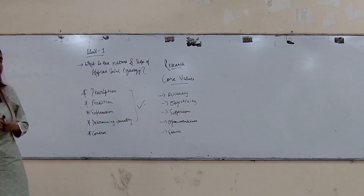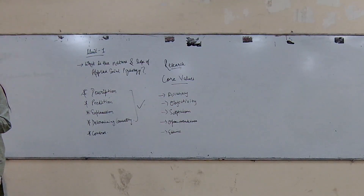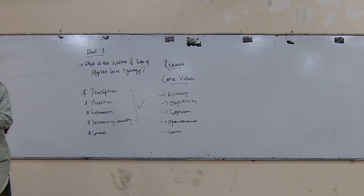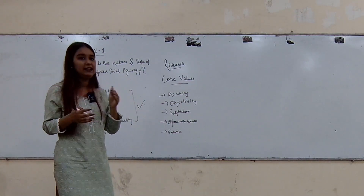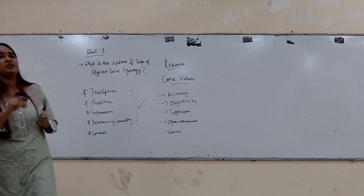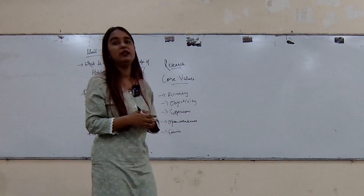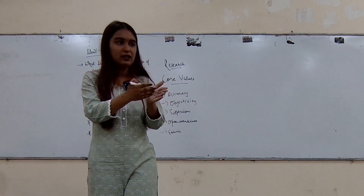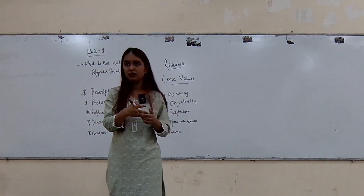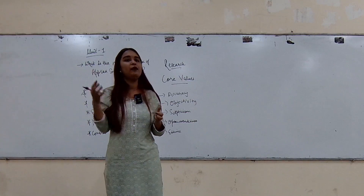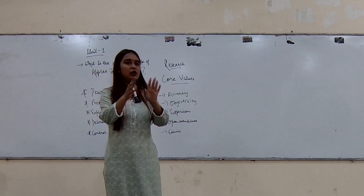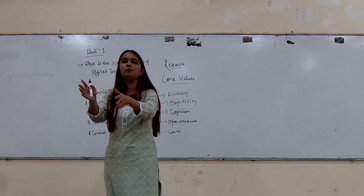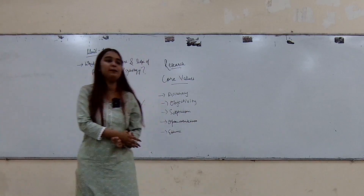Different types of research methods: first, review and secondary resources — you study things that are already documented. Then, direct observation. Observation is viewing something from a particular perspective. For example, if I want to study people's behavior in a market, I can sit by a shop as a cashier and just observe the things happening around me. That is also a type of research.